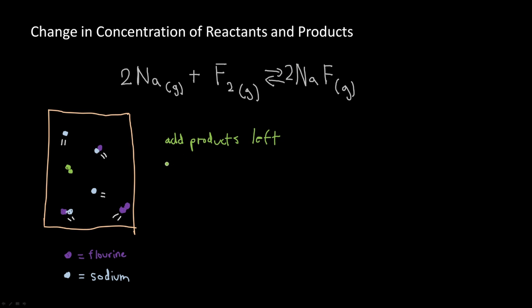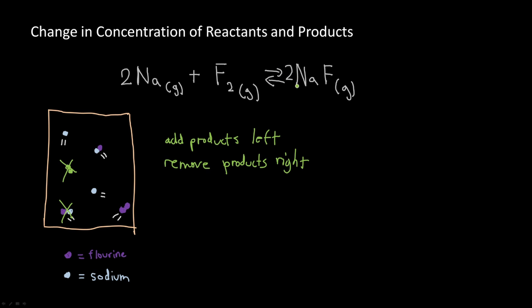Now let's see what happens when we remove products. If we remove sodium fluoride, there are far fewer molecules to decompose back into sodium and fluorine, so the rate of the reverse reaction becomes much slower. The forward reaction is now faster than the reverse reaction — it's being composed faster than it's being decomposed — so the equilibrium point shifts to the right.